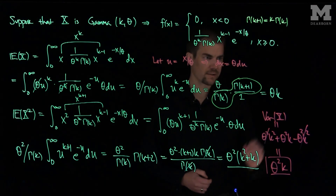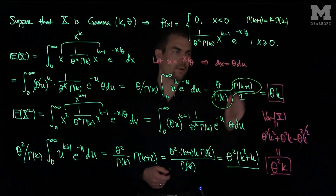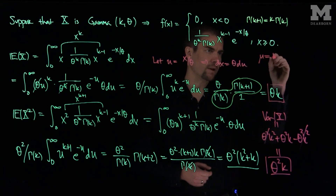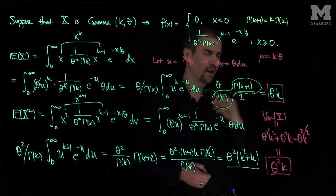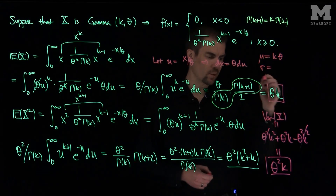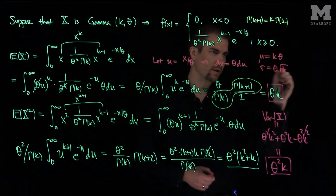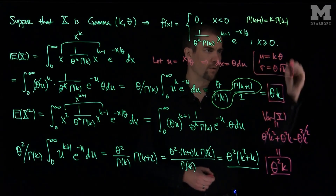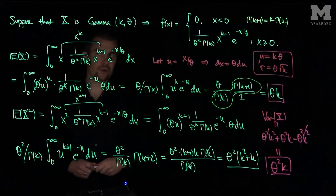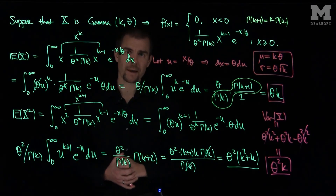So that is the variance and that is the expected value. The mean, mu, is k times theta, and the standard deviation is the square root of the variance, which is theta times the square root of k. Those are the mean and standard deviation of a gamma distribution with parameters k and theta. Thank you very much.